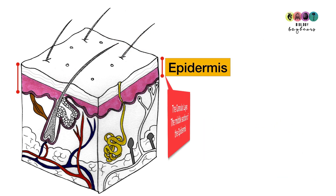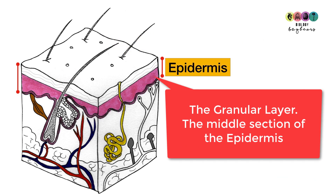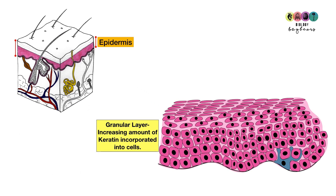The middle layer of the epidermis is known as the granular layer, just above the malpigian layer. New skin cells produced by the stem cells in the malpigian layer undergo mitosis to form new keratinocytes. As they move up through the granular layer, these keratinocytes become filled with keratin, that hard protein. Eventually these cells are pushed up to form the cornified layer.